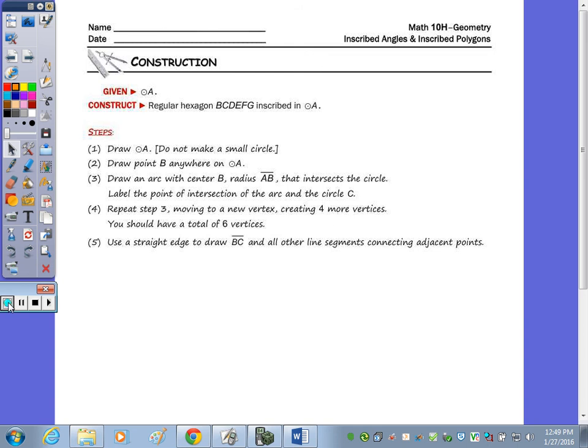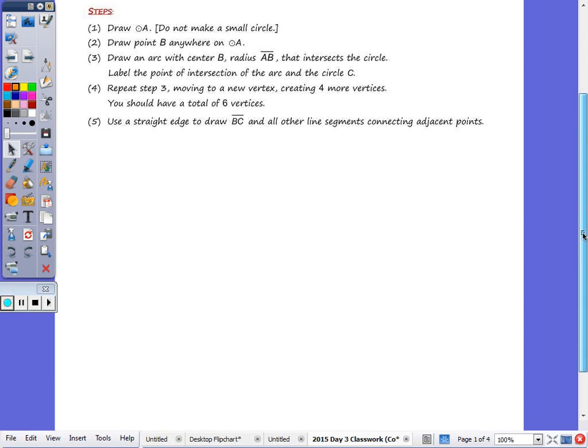We're going to do two constructions. The first one is constructing a regular hexagon B, C, D, E, F, G inscribed in circle A. And remember, a regular hexagon has all angles congruent as well as all sides congruent.